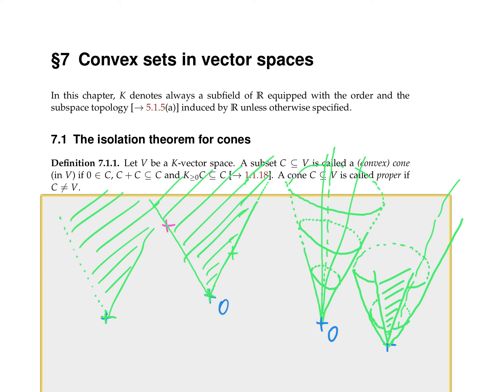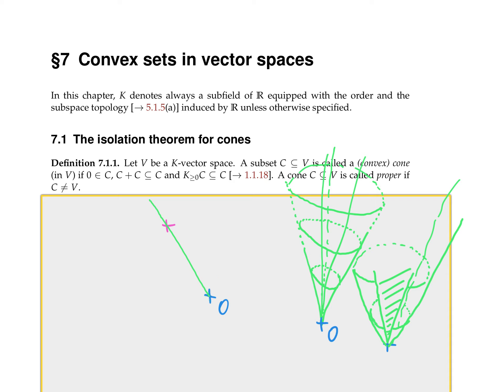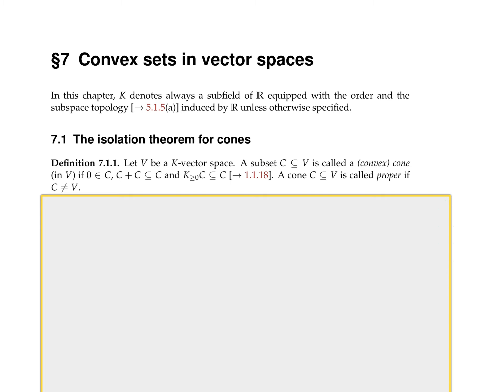Some people call it a convex cone, meaning they don't require it to be closed under addition, but that is very crucial for us. We will always assume closure under addition, and what other people sometimes call a convex cone we just call a cone.